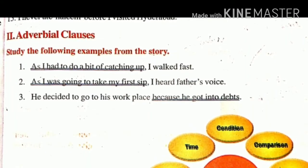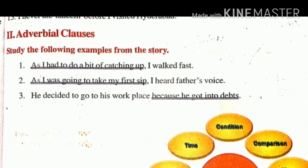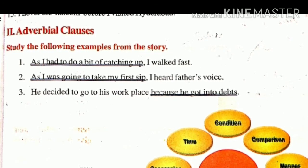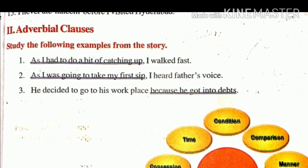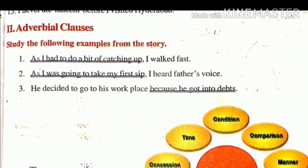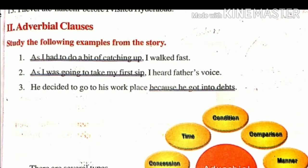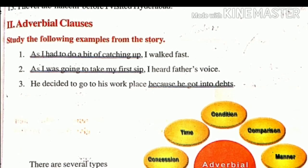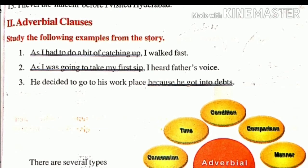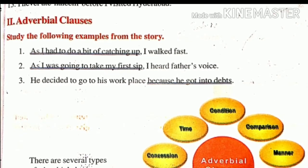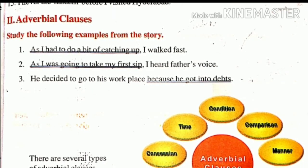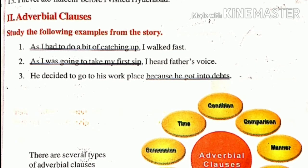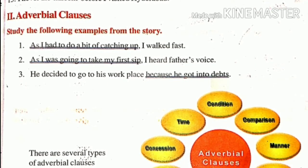10th class unit 3, page number 91, grammar number 2: adverbial clauses. Study the following examples from the story 'The Journey.' Example number 1: 'As I had to do a bit of catching up, I walked fast.' You can write the reason why he walked fast, and the adverbial clause of reason is 'as I had to do a bit of catching up.'